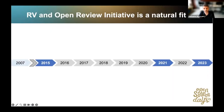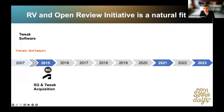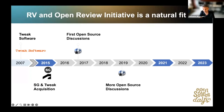RV's history started at Tweak Software, founded by Jim Arouyan and Seth Rosenthal in 2007. Using experience gathered at ILM, they created RV with a goal of making it a customizable, tightly pipeline-integrated review tool. RV was built with open source in mind from the beginning — its plugin architecture allows customization and extensibility. Soon after acquisition by Autodesk in 2015, the possibility of opening RV was discussed multiple times, both internally and externally, but some pieces were missing to make it a compelling story.